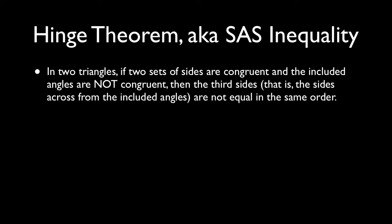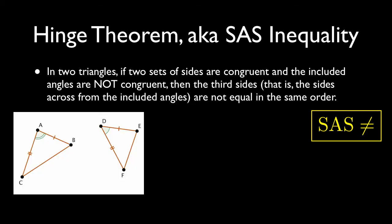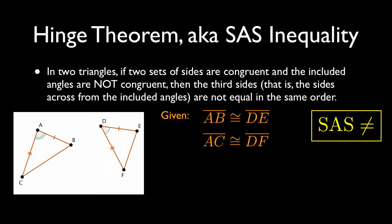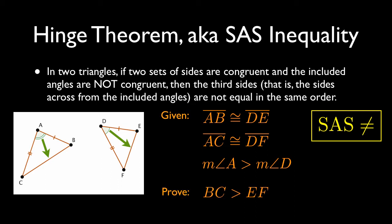The first theorem we'll discuss is called the Hinge Theorem, also known as the SAS Inequality. The Hinge Theorem states: in two triangles, if you have two sets of sides that are congruent and the included angles are not congruent, then the third sides are also not equal, in the same order that those two angles are not congruent. In other words, if we have triangles where AB is congruent to DE, AC is congruent to DF, and angle A is bigger than angle D, we can prove that BC is longer than EF.